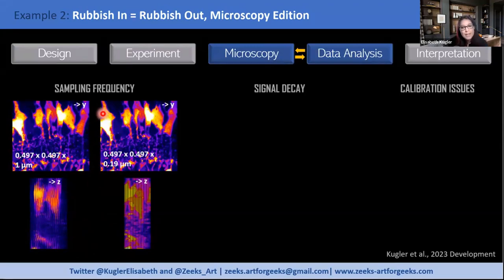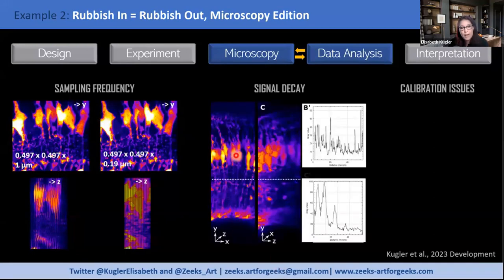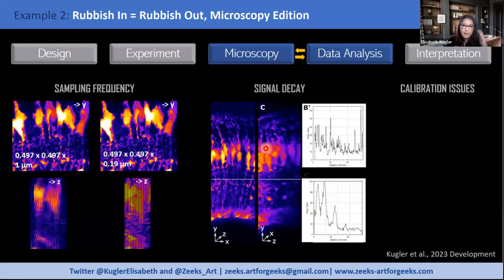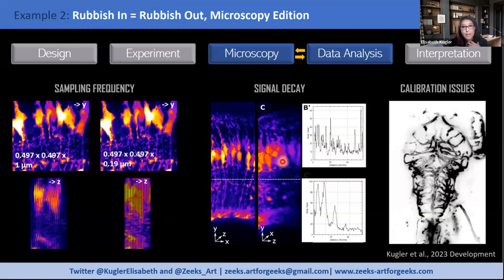The second problem is signal decay, especially common in confocal imaging where a focused laser hits the tissue. Looking at the z-axis side of the stack, the signal distribution in X-Y is very homogenous as expected. But as the laser penetrates deeper into the tissue, there is a huge decay of signal within just a few microns. When people assume they are quantifying the same thing at the surface as at depth, we need to caution them — it may not be the same thing at different tissue depths.